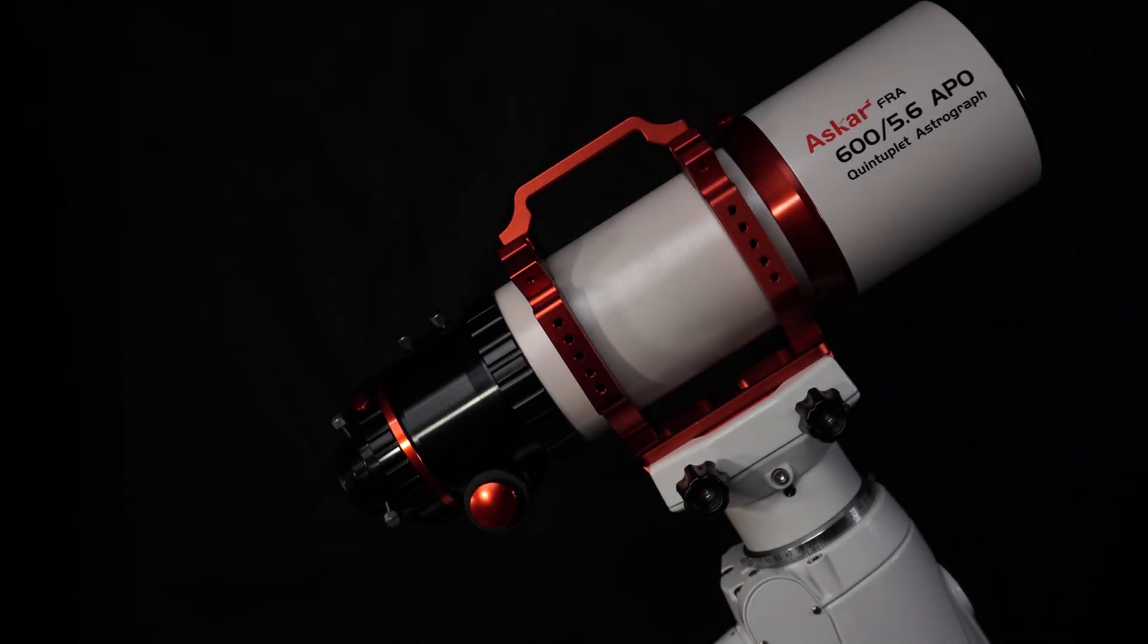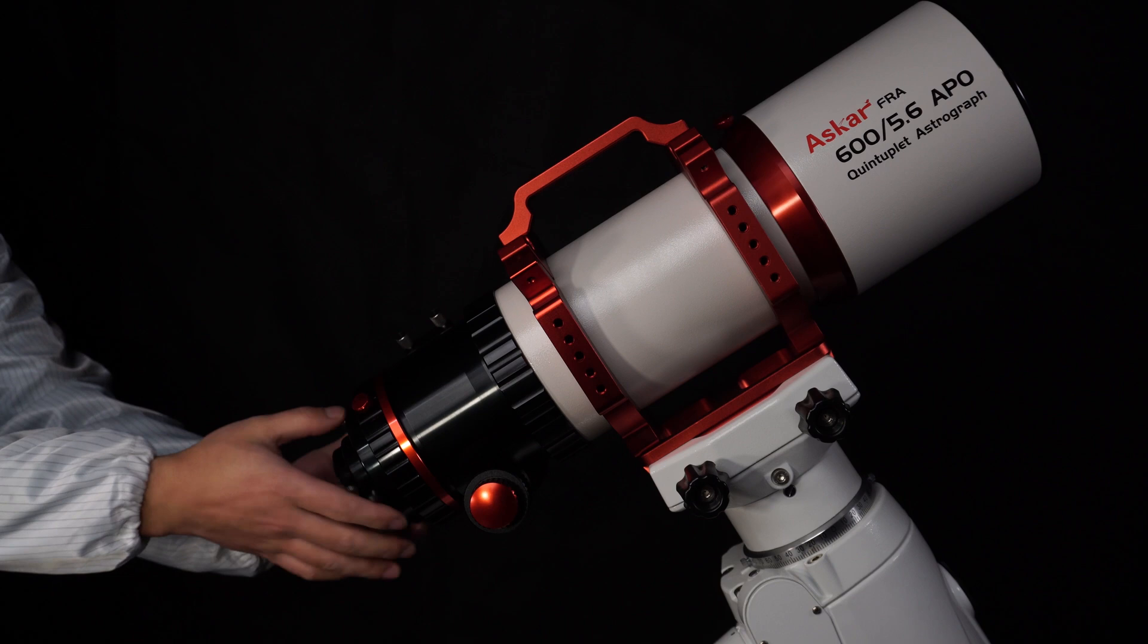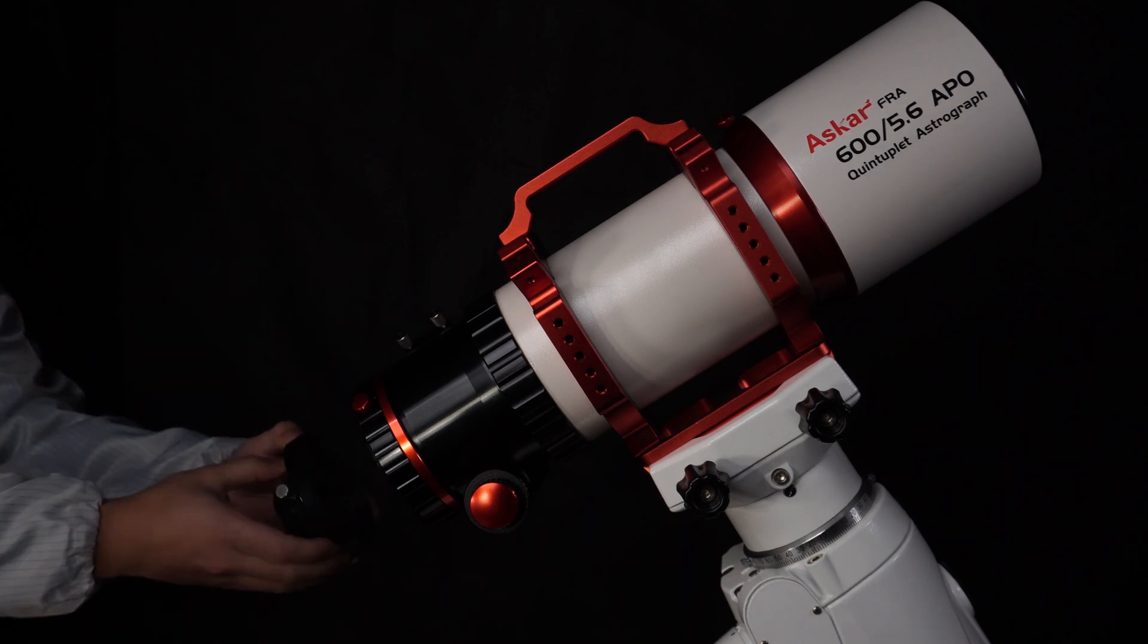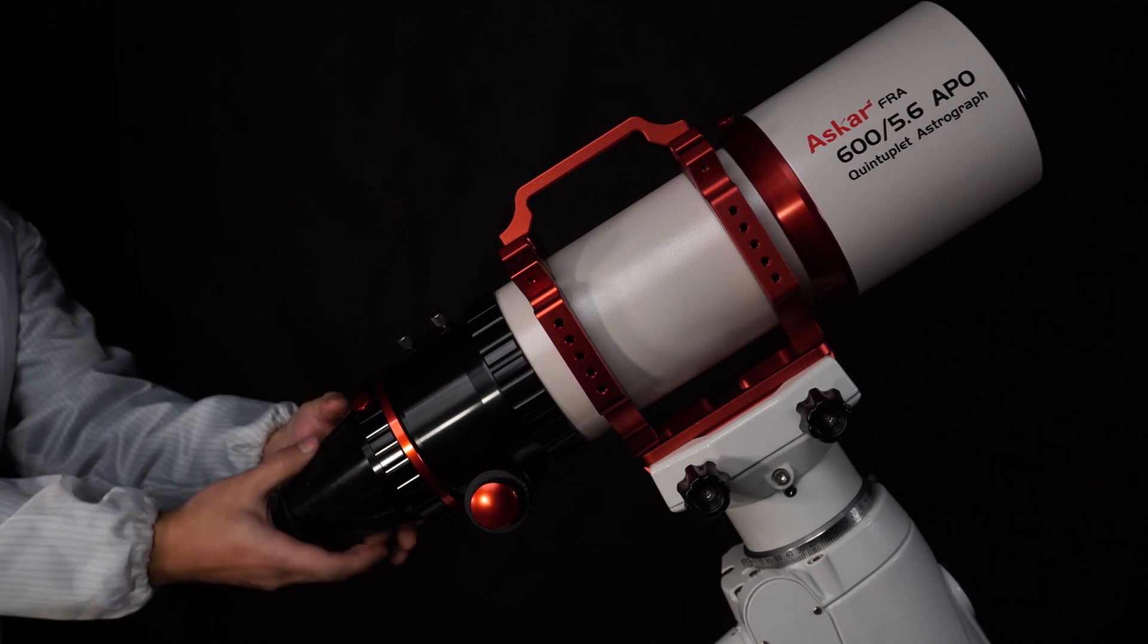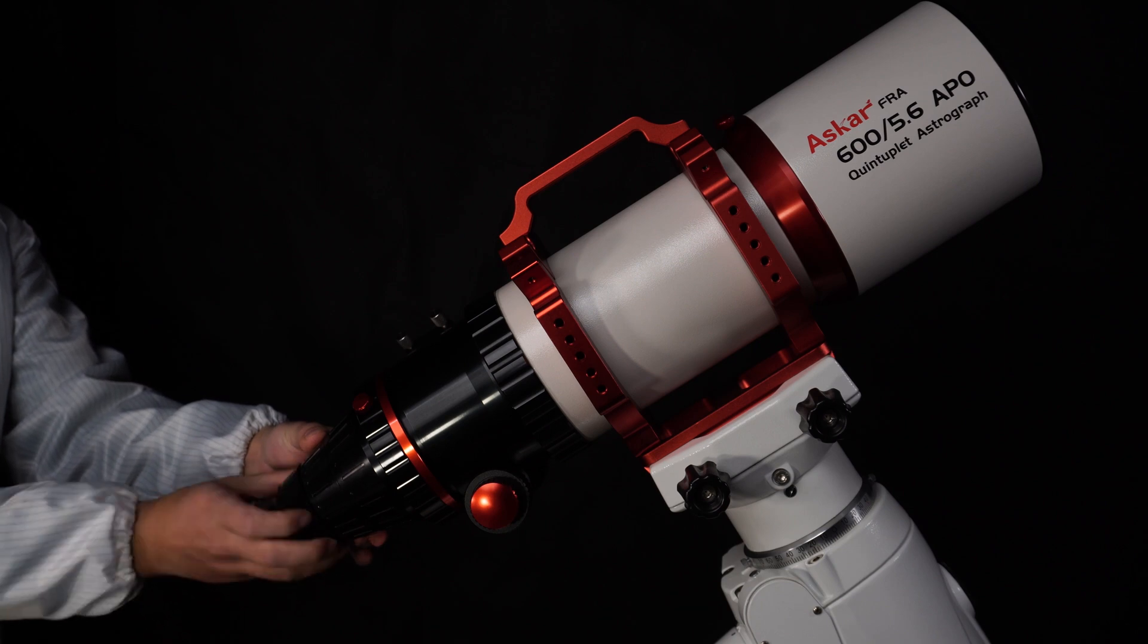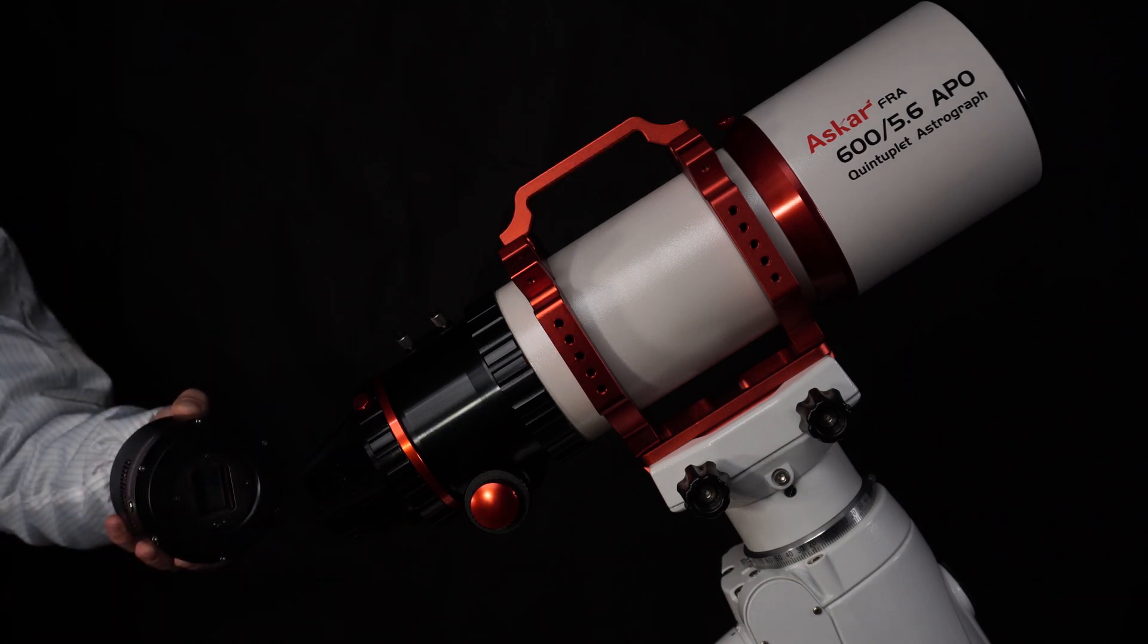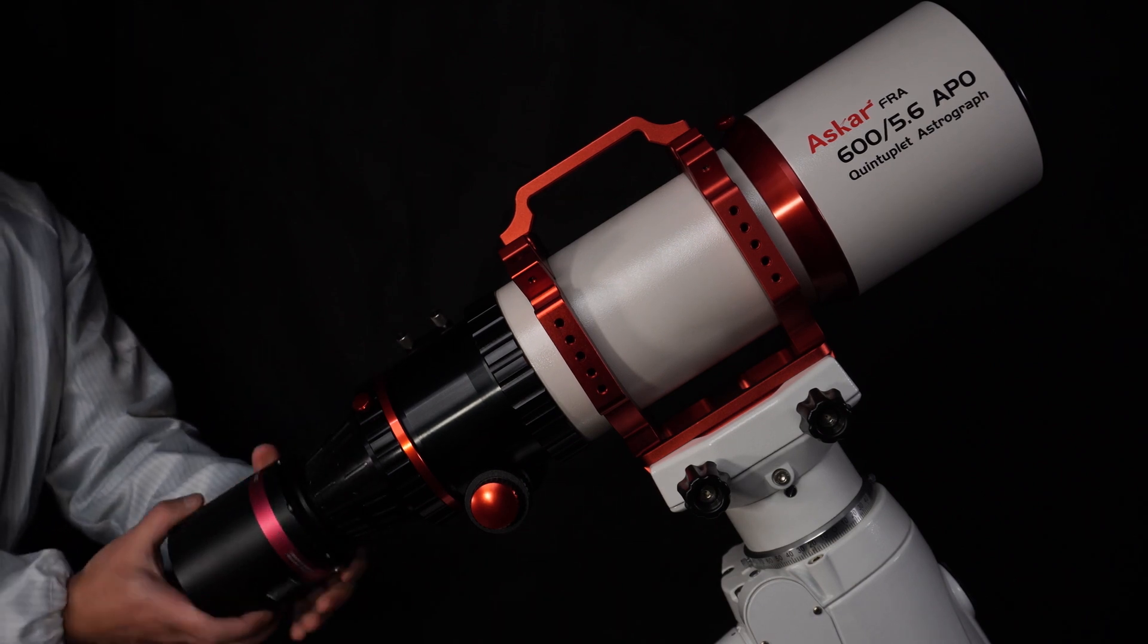Now I am going to show you how to attach our astronomy camera to the Quintuplet astrograph. First, we should take off the original adapter from the astrograph. Second, install the conical extender on the astrograph. Then thread the M54x3-4 adapter off the extender. This is the astronomy camera that we are going to use today. Attach the astronomy camera to the extender.